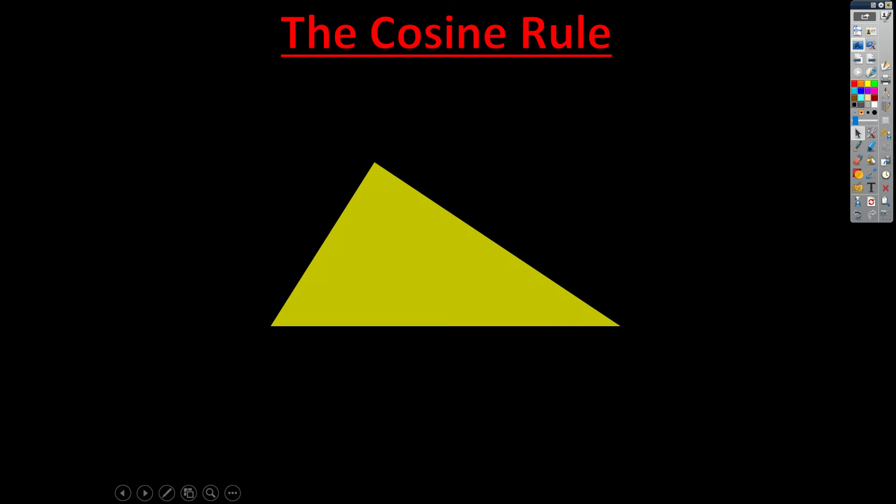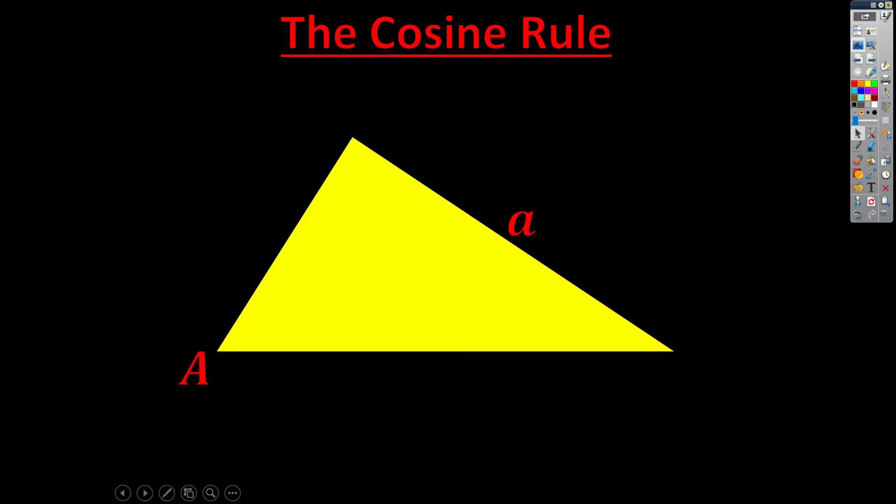So we're going to start off with our arbitrary triangle again. We're going to label up their opposite sides, capitals for angles, lowercase letters for sides.